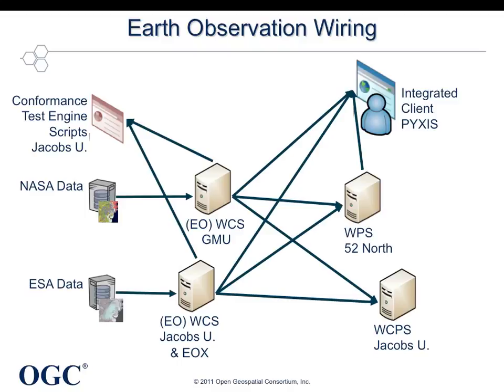Satellite data can go through two stages of analysis. First, preprocessing occurs to filter out things like cloud cover, correct for aerosol corruption effects, and to remove residual atmosphere corruption to produce the best possible signals from the imagery. In OWS-8, participants took data from NASA and ESA and applied these preprocessing steps before serving the imagery via EOWCS.